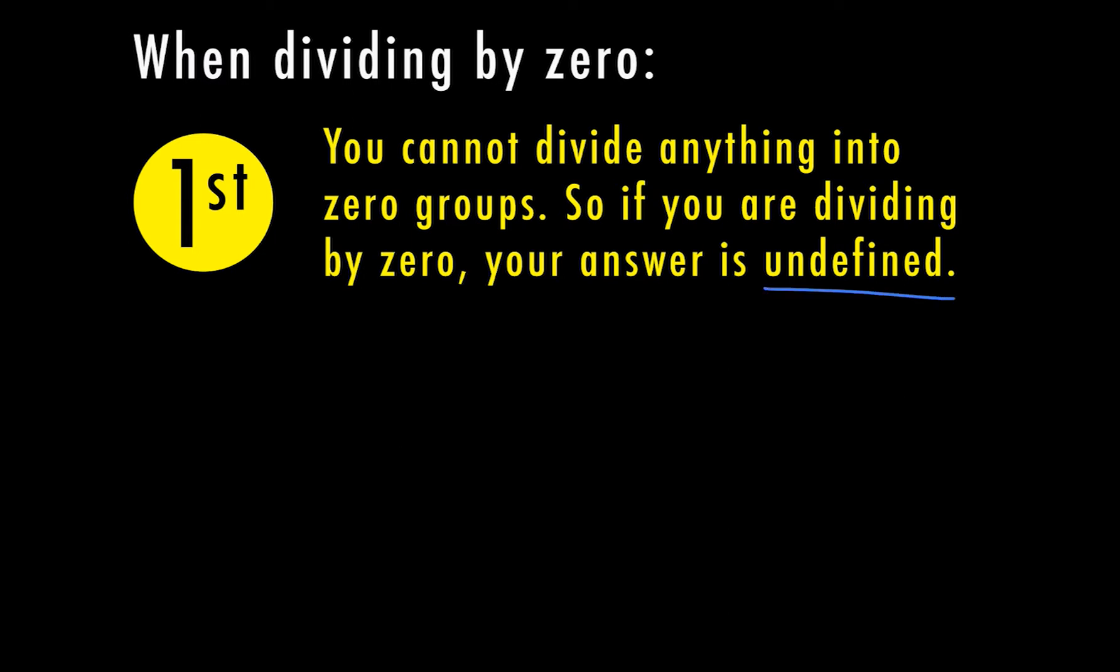So let's look at why this doesn't work and why the answer is actually undefined. We're going to start with a simple problem here, 12 divided by 4 which equals 3. If we were to work backwards and solve it by multiplying to check our answer, we would take 3 and multiply by 4 to get 12 as our answer. And we know 3 times 4 is 12.